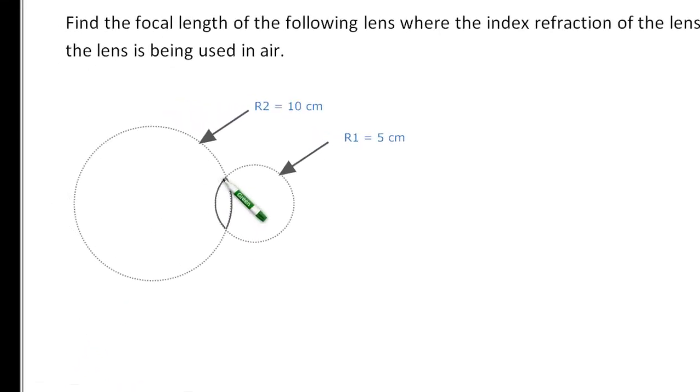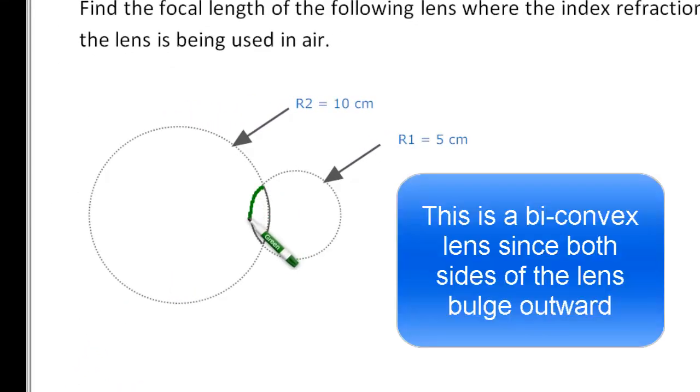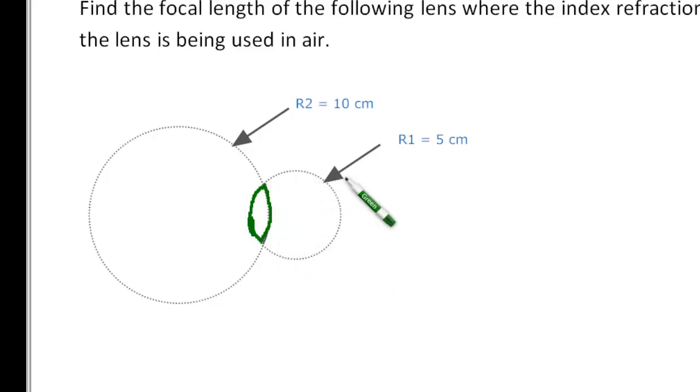So our lens is right here. It's at the intersection of these two circles. The radius of curvature for the front part of the lens is 5 centimeters and the radius of curvature for the back side of the lens is 10 centimeters.